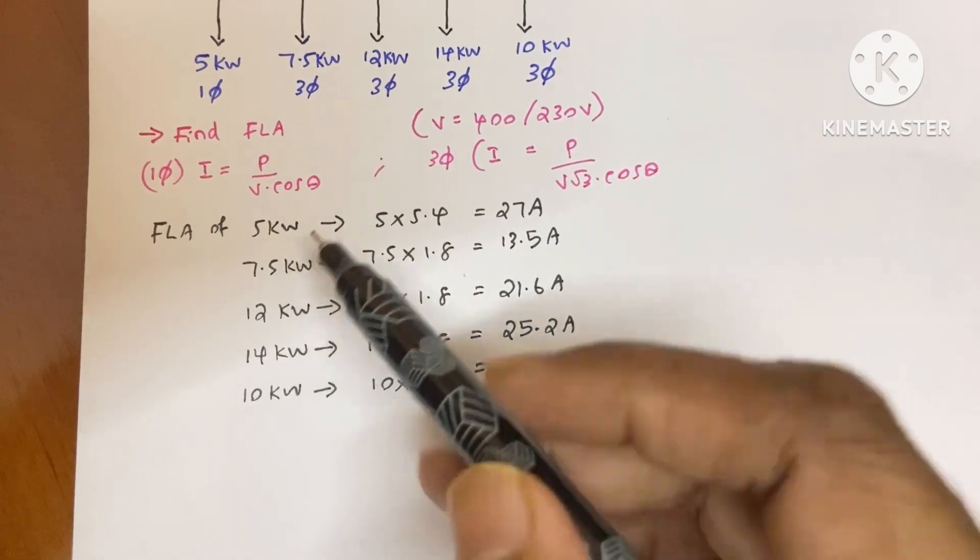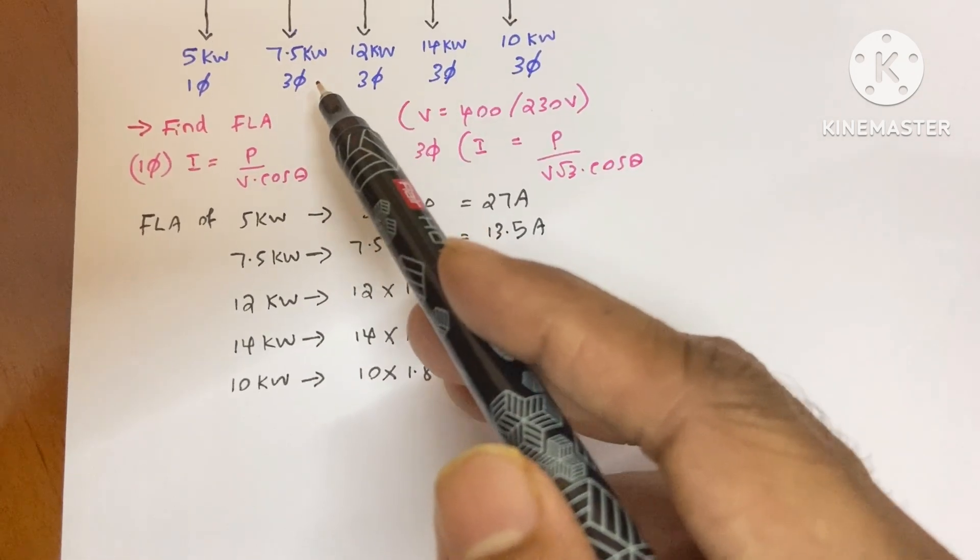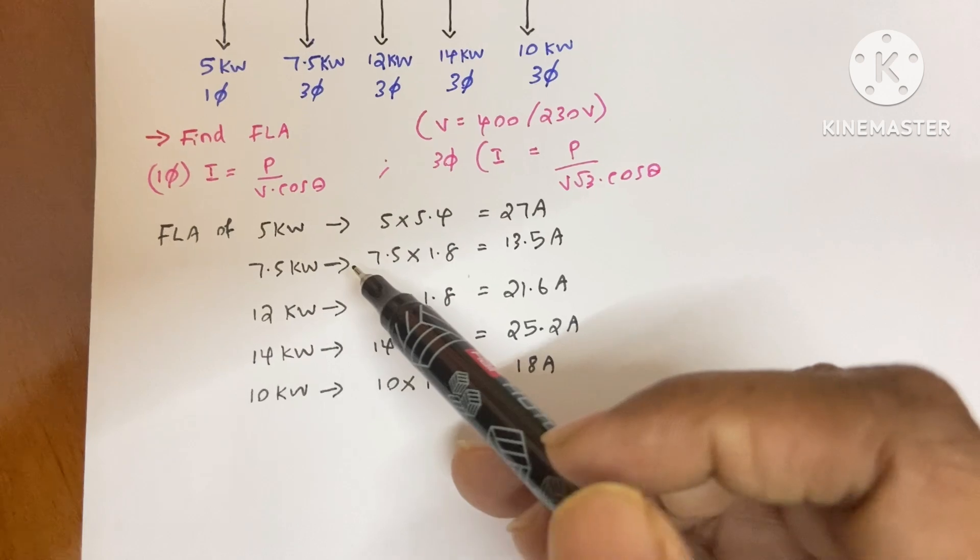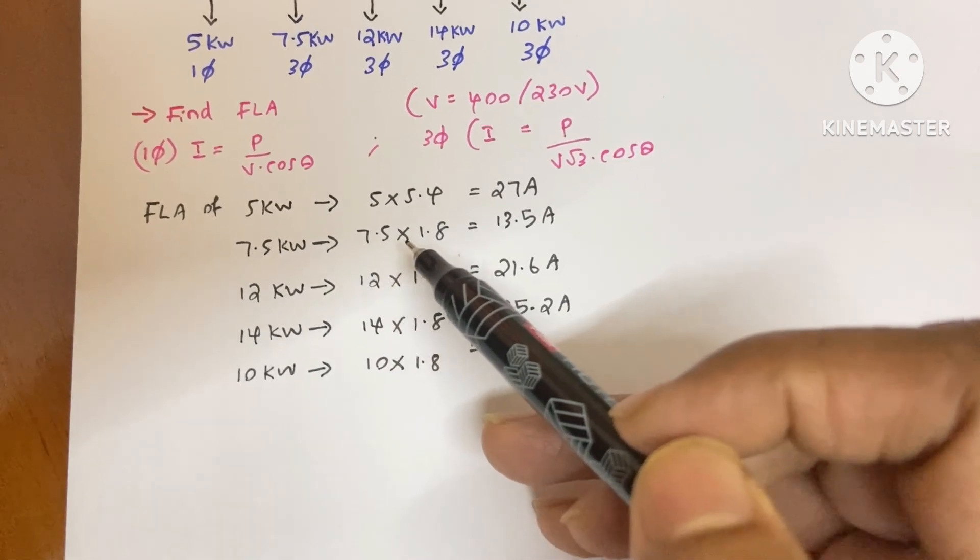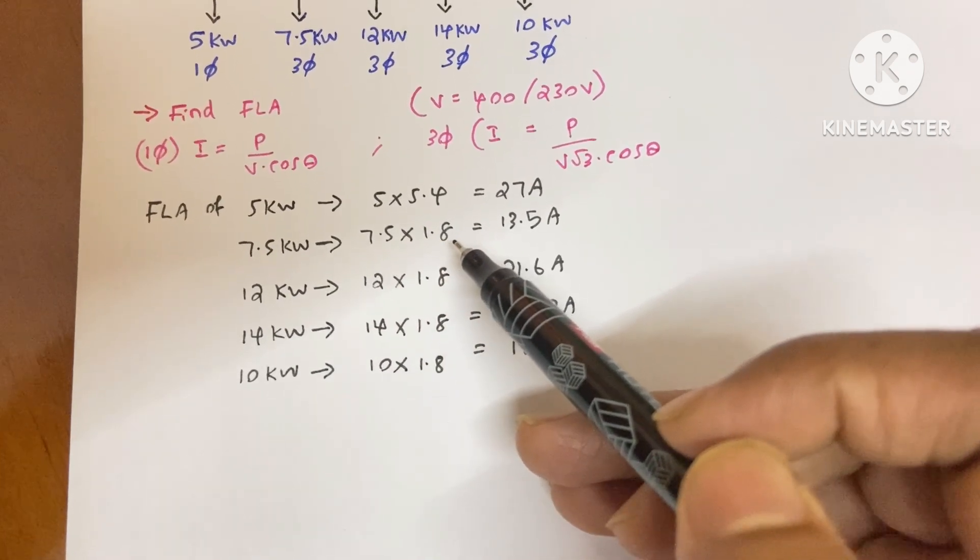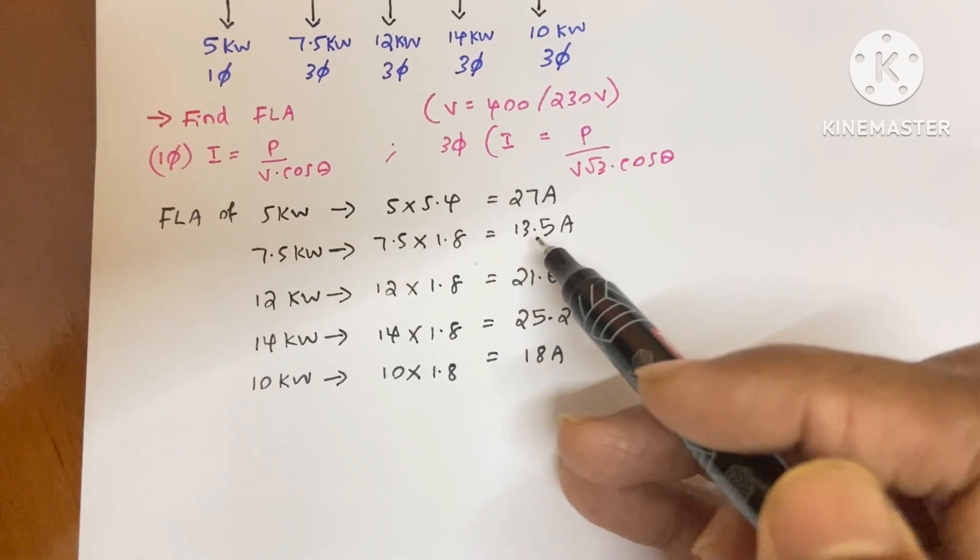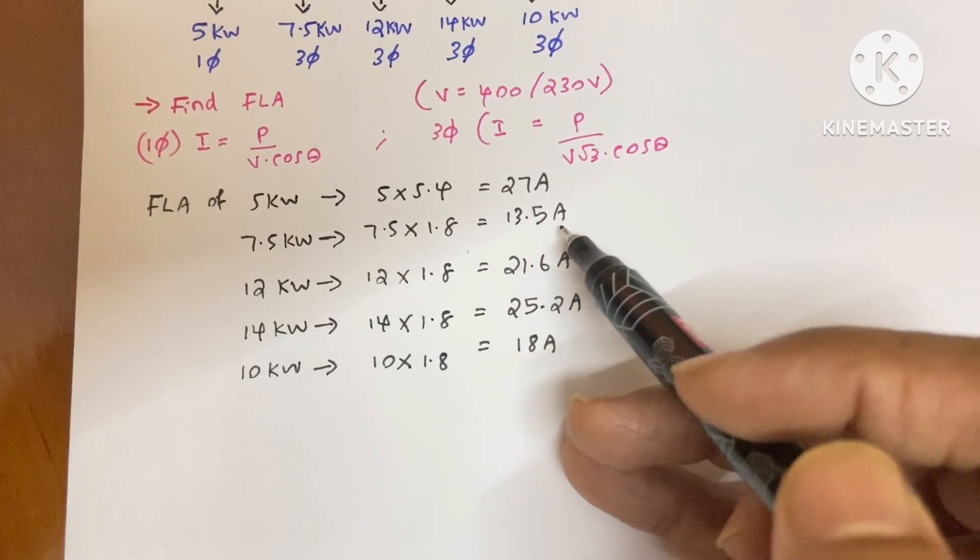The next motor is 7.5 kilowatt three phase motor, and its full load ampere is 7.5 kilowatt into 1.8, so we will get 13.5 ampere.